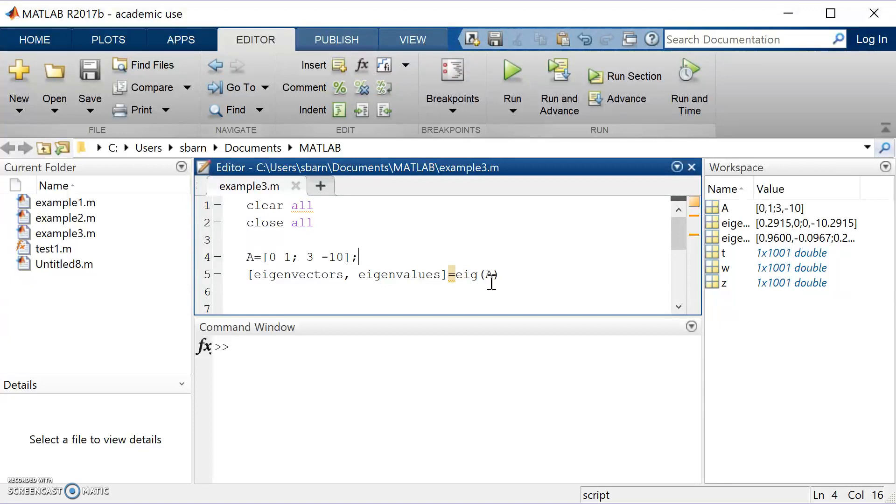And then I've called a function in MATLAB, which is going to spit out the eigenvectors and the eigenvalues and in that order. And the function is EIG. And then you just need to give it the matrix that you want it to calculate it on.